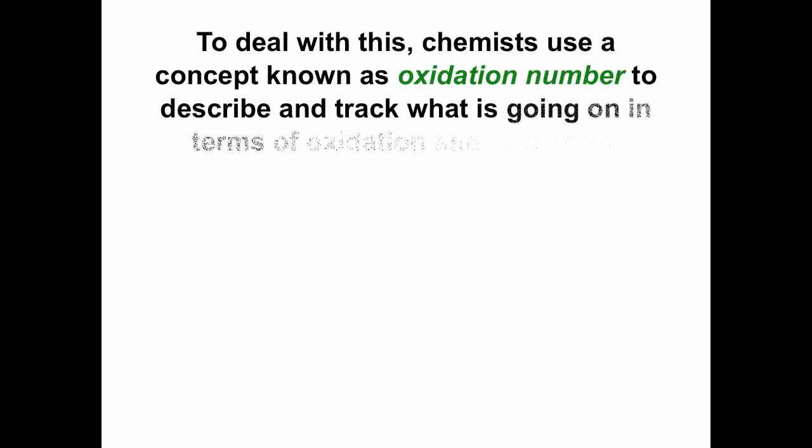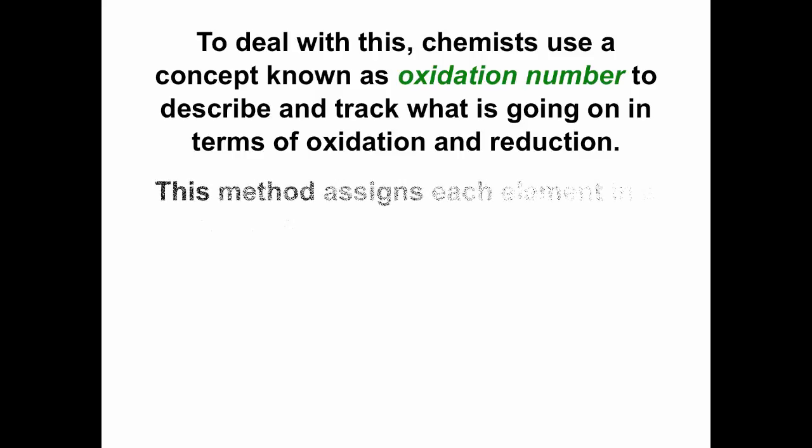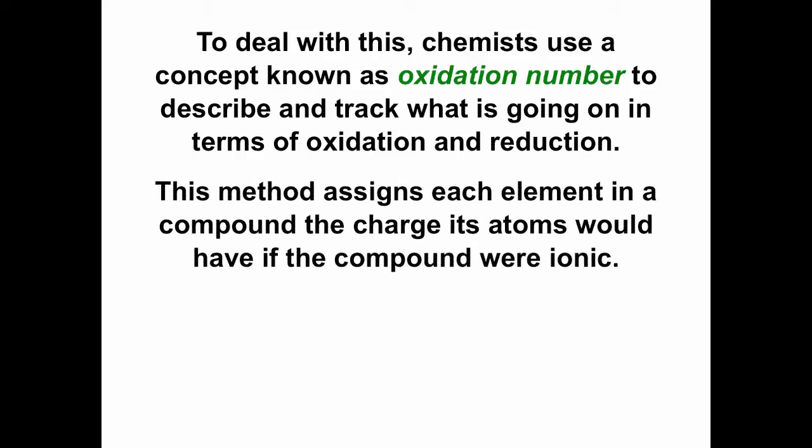Chemists have developed a concept called oxidation number, which we use to describe and track what's going on in terms of oxidation and reduction — gain and loss of electrons — even in molecular compounds where charges aren't clear-cut. How this works: we assign to each element in a compound the charge that the atoms would have if the compound were ionic. We treat the compounds as ionic when assigning oxidation numbers even though they aren't — this is a convention, not what's actually happening. These charges don't really reflect charges of ions.